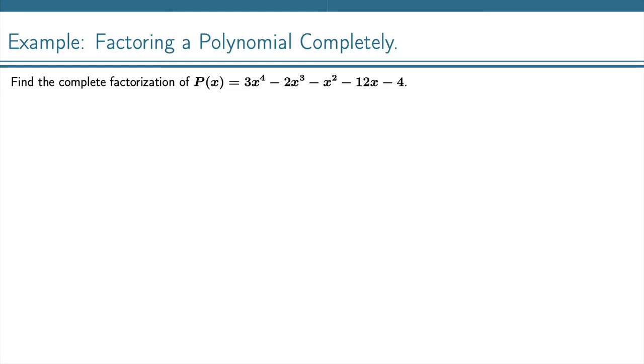Find the complete factorization of p(x) = 3x^4 - 2x^3 - x^2 - 12x - 4.